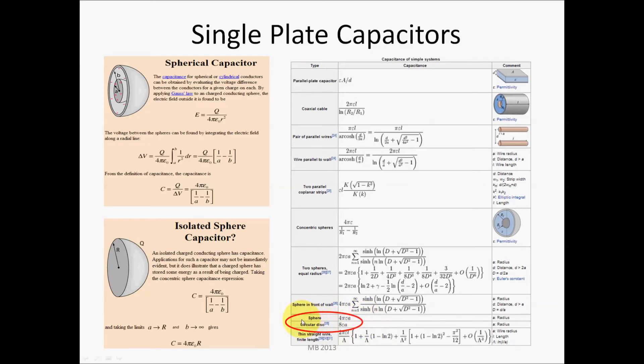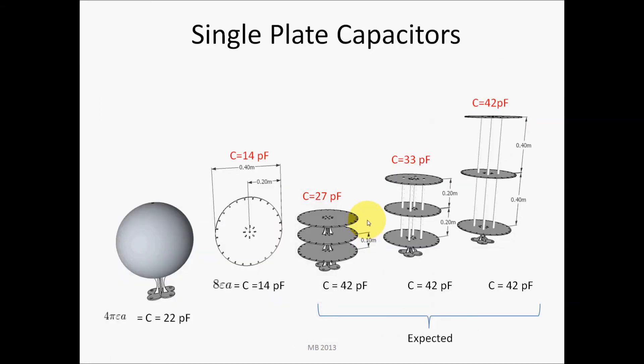It's equal to 4π times the free space permittivity constant times the radius. And you can calculate the capacitance for just a circular disk, which would be an easy to fabricate capacitive terminal.